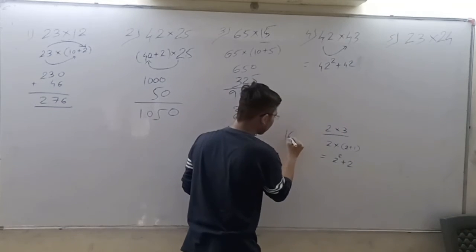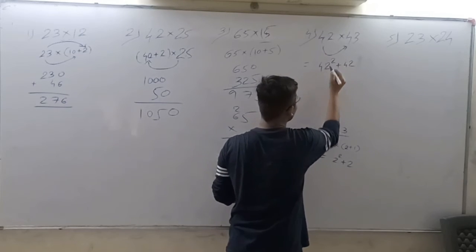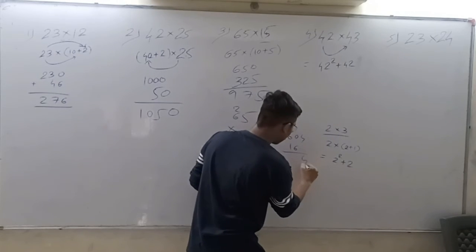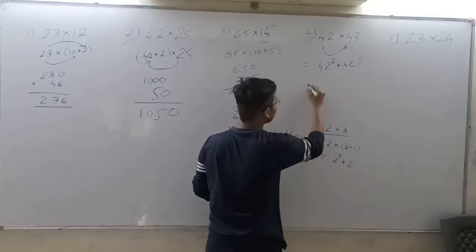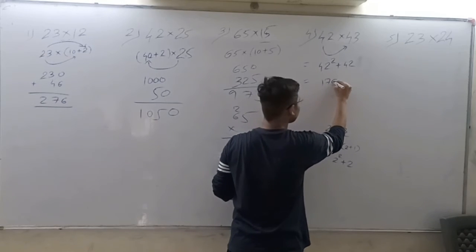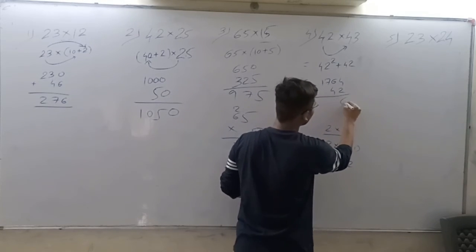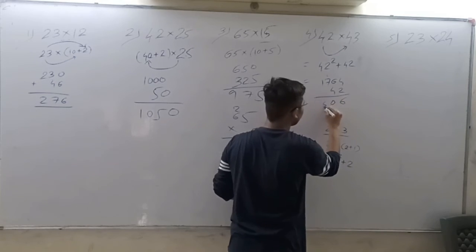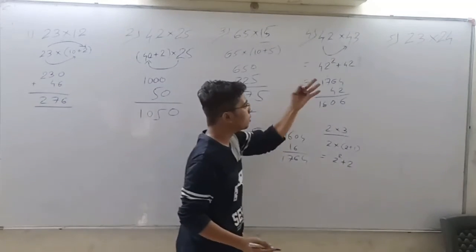42 square, how do we calculate? 1600 plus 4 times 4 is 16. So we get 1764. Then 1764 plus 42 equals 1806. Now next.